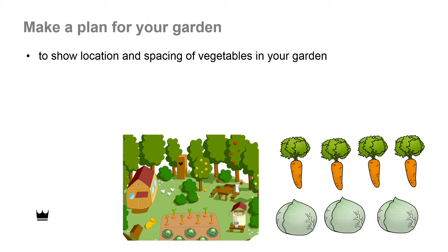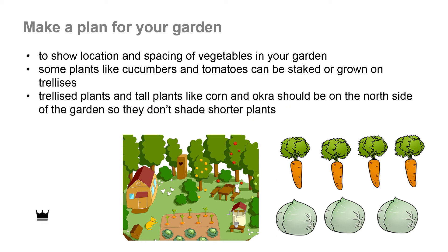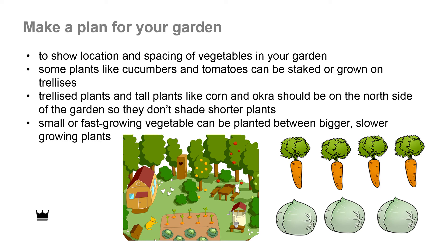Before you transplant your seedlings, make a plan or diagram for your garden to show location and spacing of the plants. Some plants like cucumbers and tomatoes can be staked or grown on trellises. Trellis plants and tall plants like corn and okra should be on the north side of the garden so they don't shade out shorter plants. Small or fast-growing plants can be put between the bigger, slower-growing plants — we'll harvest them and give room for the bigger plants to grow.